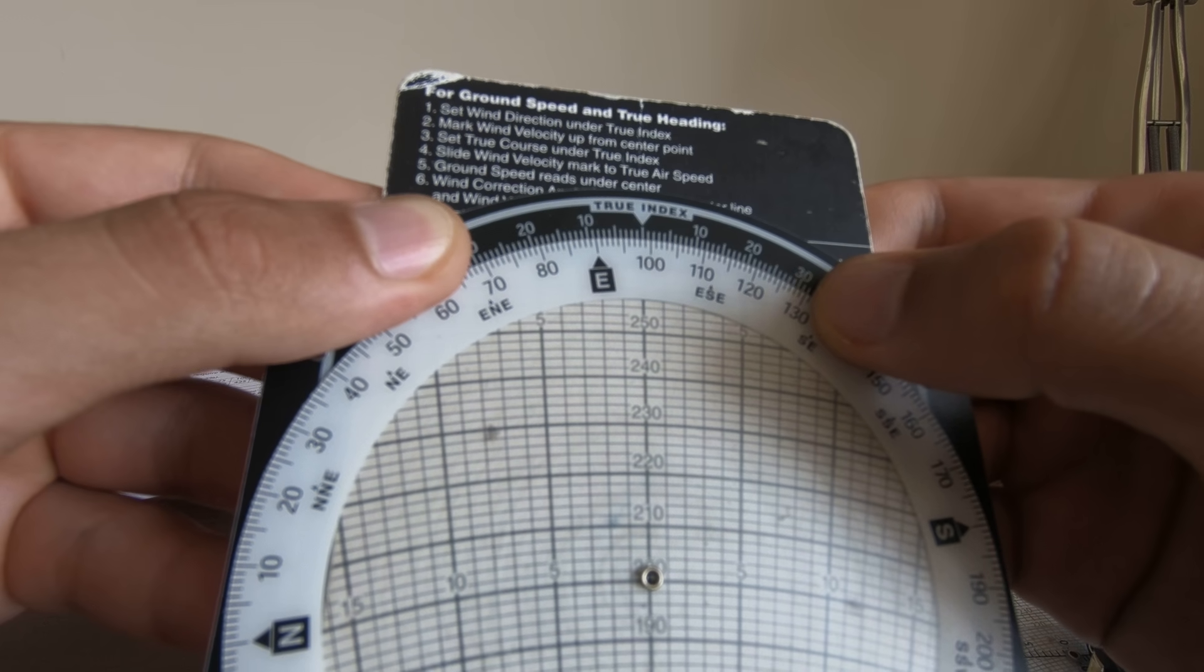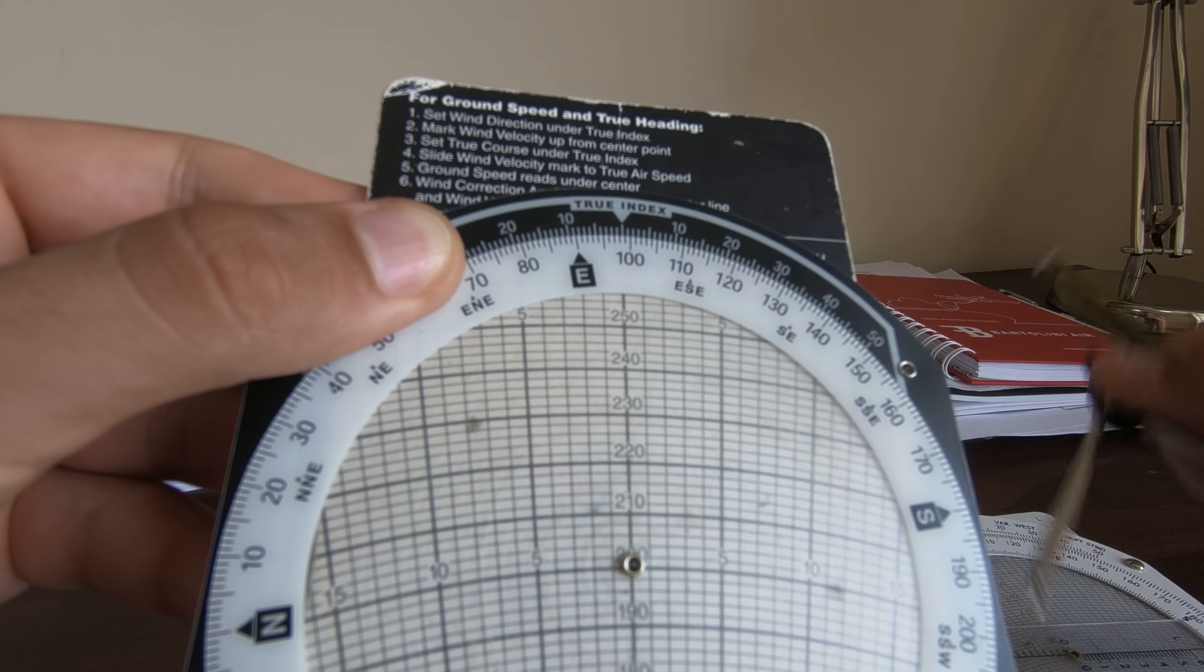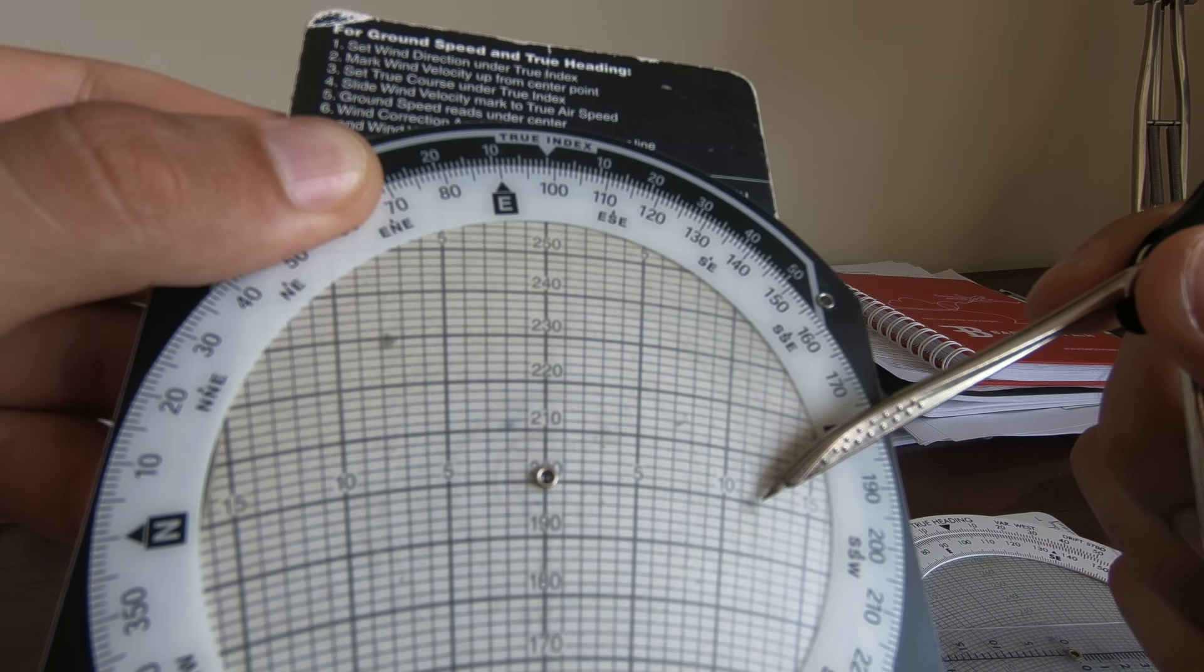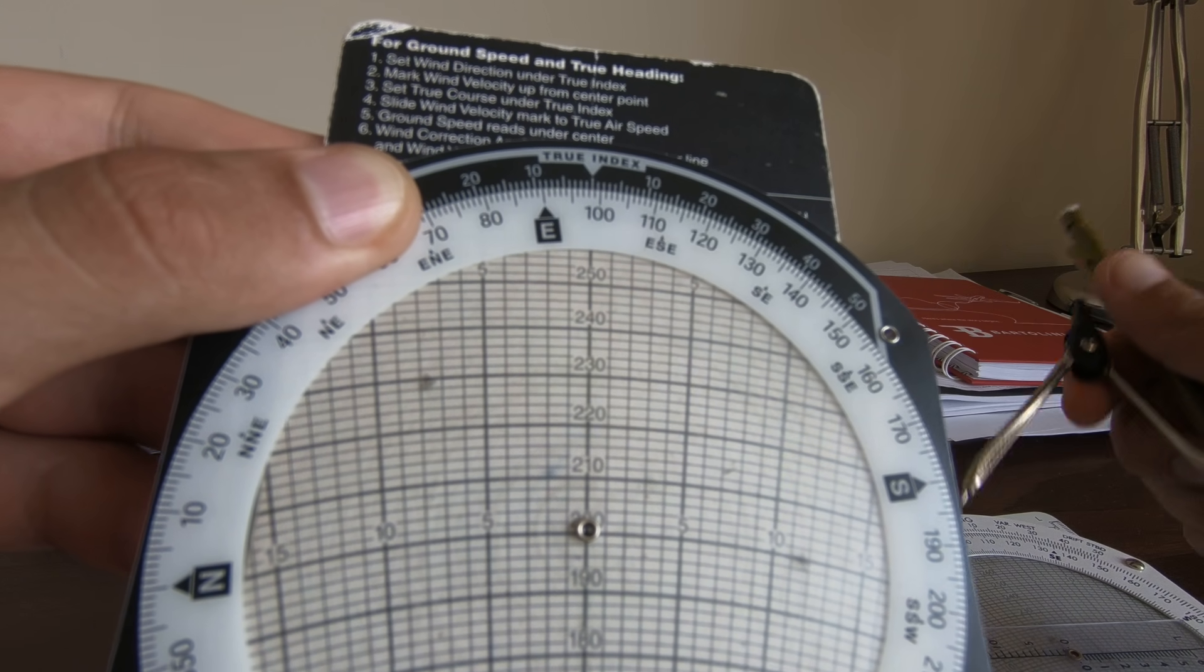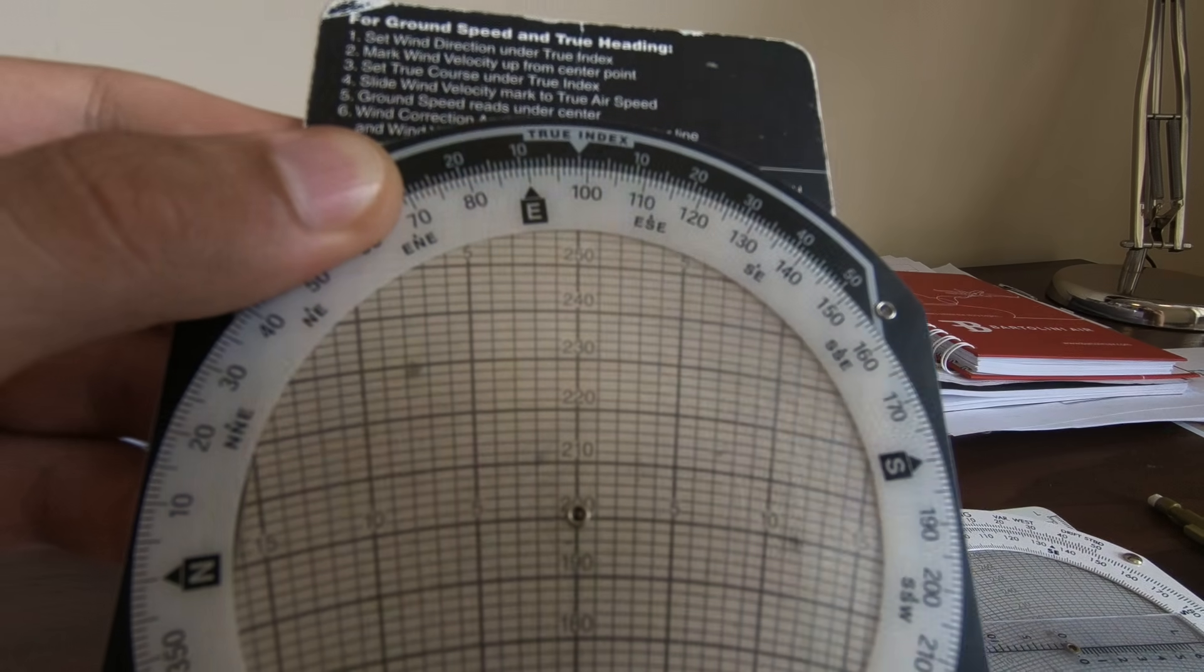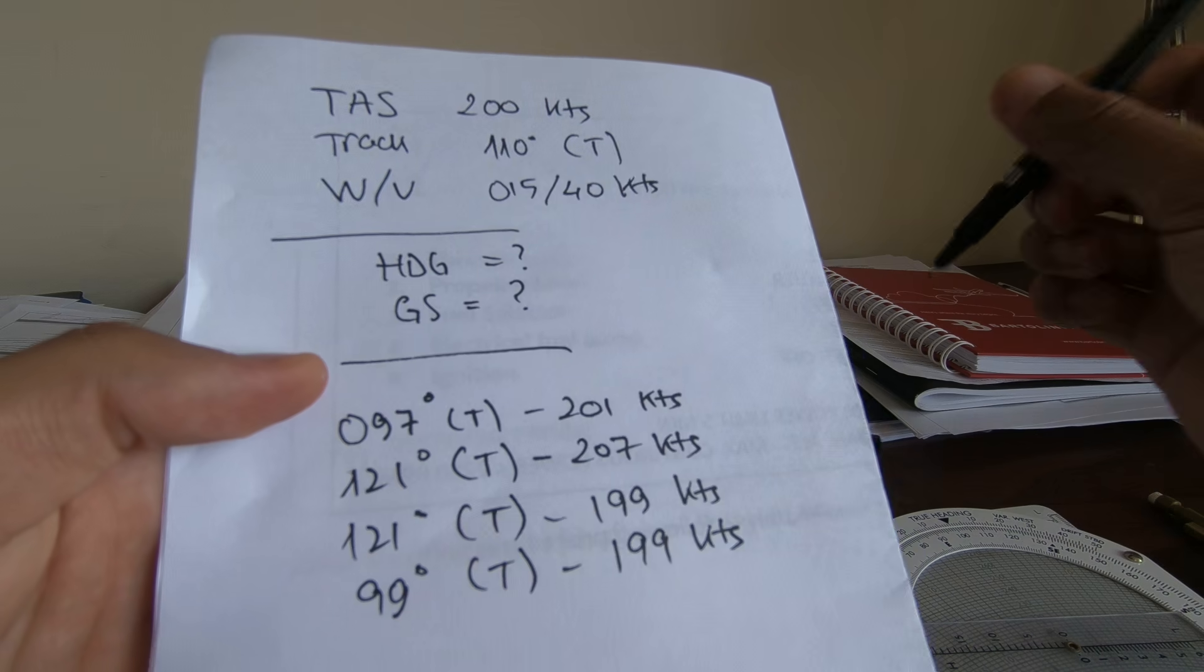Here we go, we have 199 ground speed. You see, this is about 200, it's a bit lower, 199. And the true heading is 99. So final answer: 99 true and 199 knots ground speed.